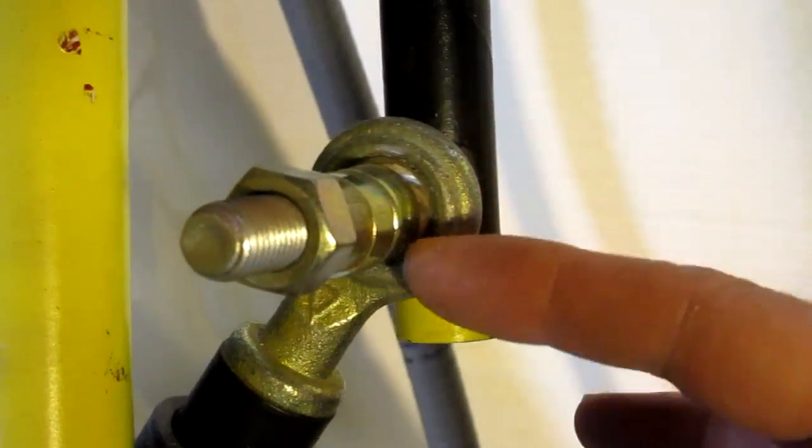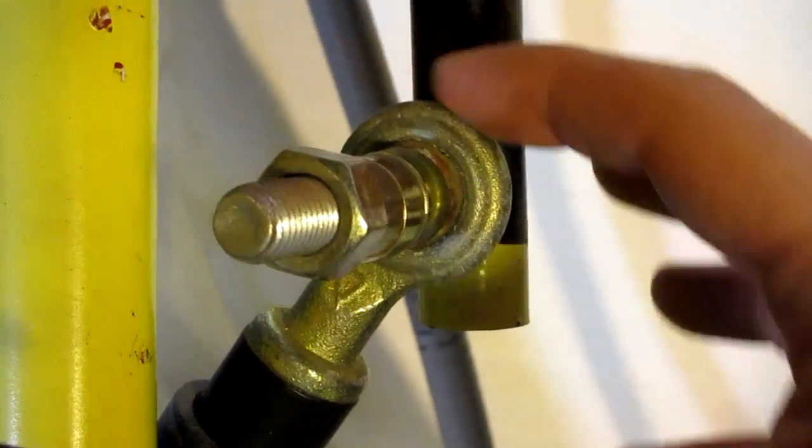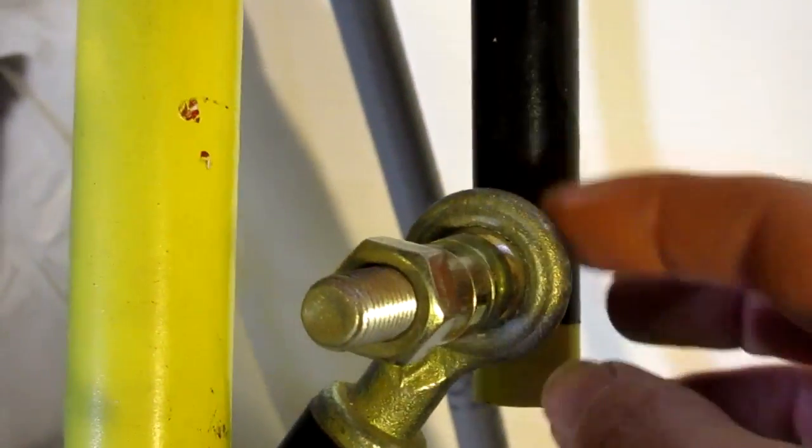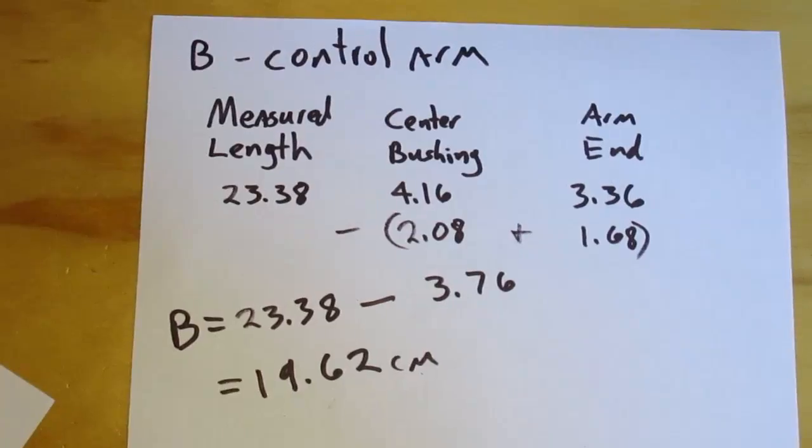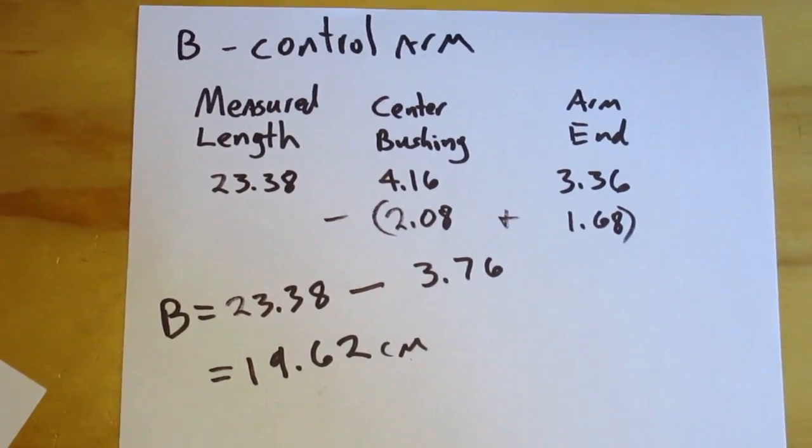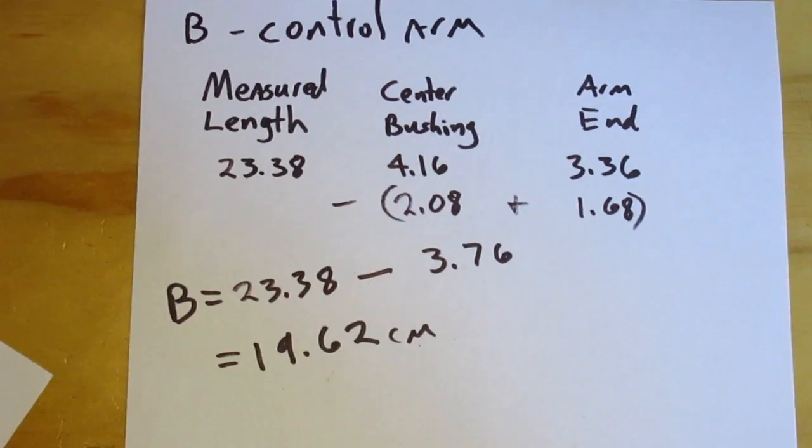And I'll, once again, subtract half of this distance, measuring from the outer point here up to the outer point there. Here's the control arm measurements, which are also known as B.